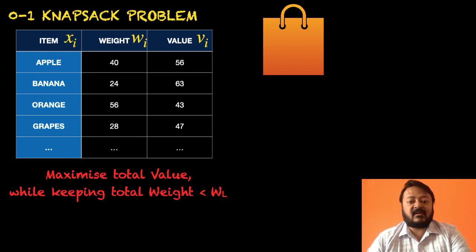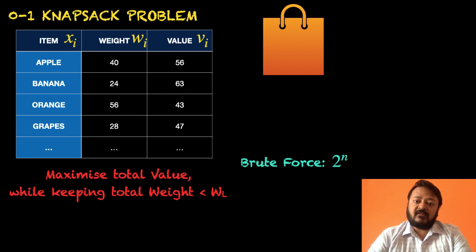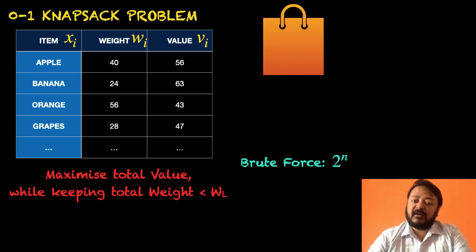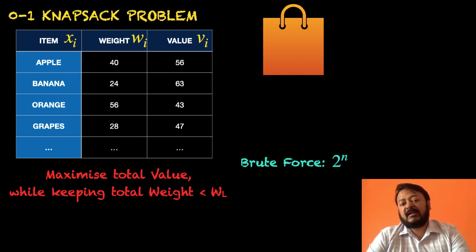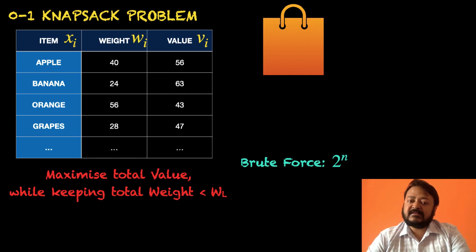Now let's see why we actually need a genetic algorithm — why can't we solve this in a conventional brute force manner? If you solve this by brute force, you have 2^n possibilities to evaluate. If you have n items — an apple, a banana, an orange, grapes, and so on — and you are allowed to choose only one unit of each item, you cannot take 2 apples or 3 oranges; you can take only one. This is a restriction imposed for simplicity.